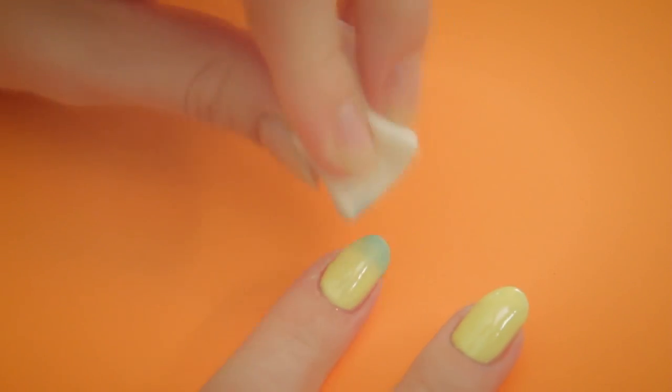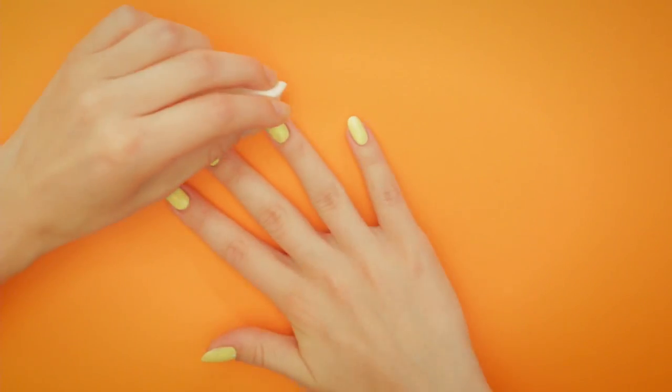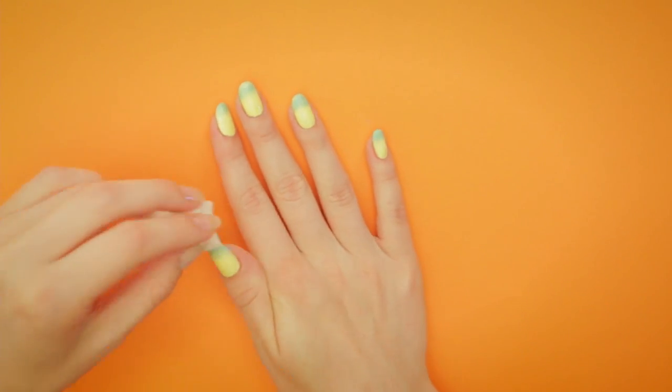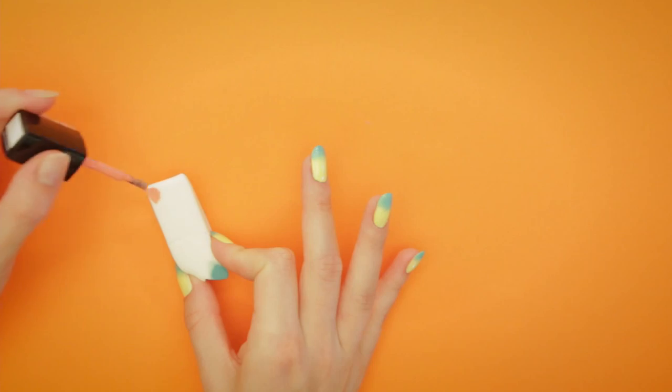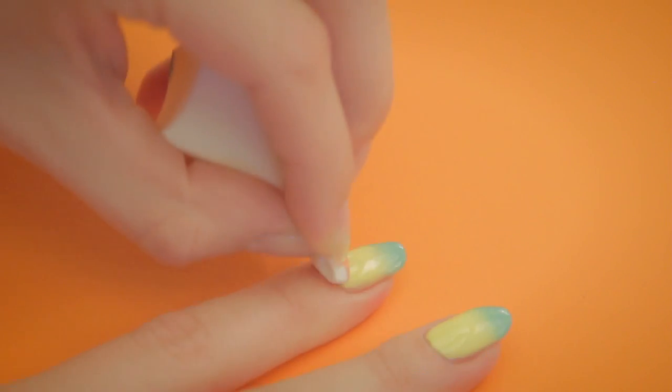Then take your salmon color and dab it at the lower part of your nail.